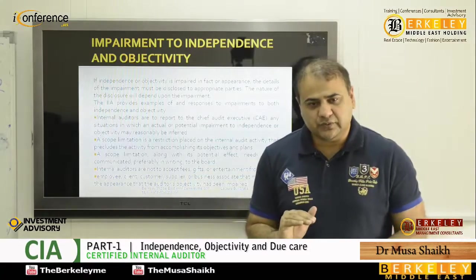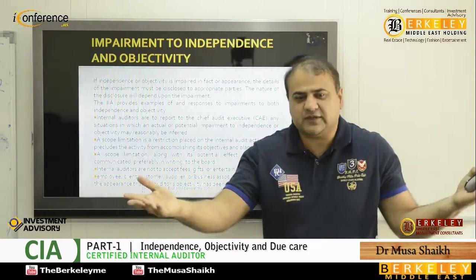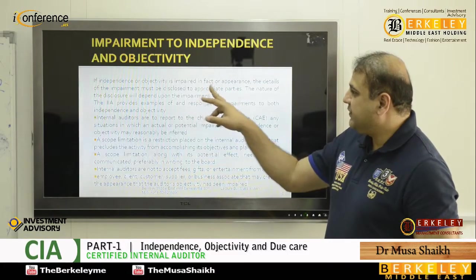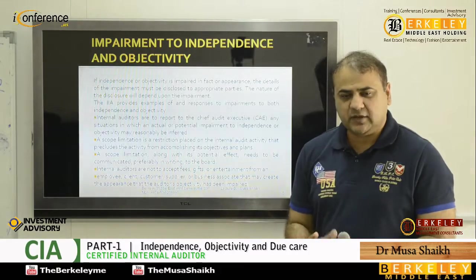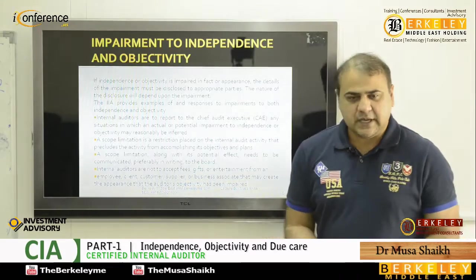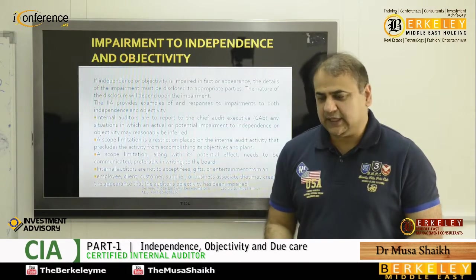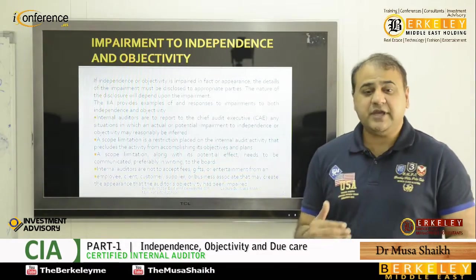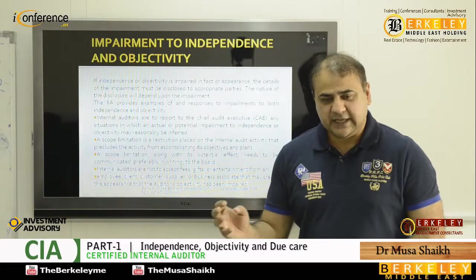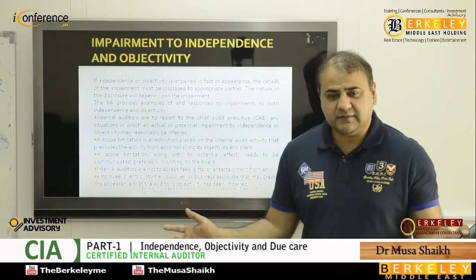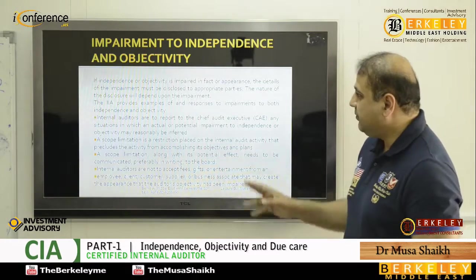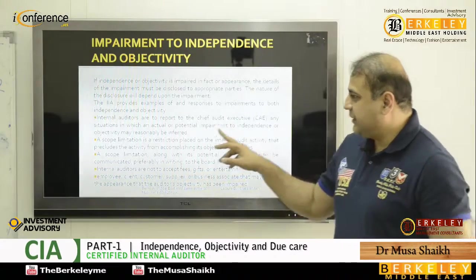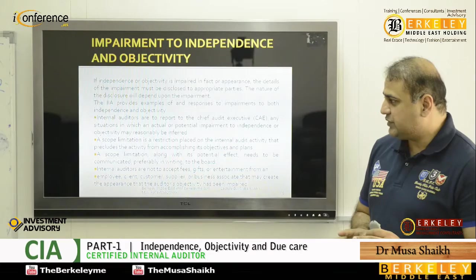Impairment to independence means a situation where we say this is not fair and we should not trust the auditor. Independence or objectivity is impaired in fact or in appearance — meaning either something actually happened or it merely appears that way. For example, if I invite my internal auditor to watch a movie with me over the weekend and give him expensive gifts, that is an apparent impairment, because if the auditor accepts expensive gifts and starts spending time with the auditee, that is not allowed and impairs objectivity. The IIA provides examples of and responses to impairment, requiring internal auditors to report to the CAE any situation involving actual or potential impairment.